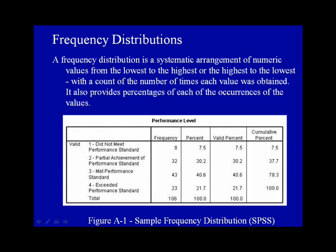As an example, if we consider an analysis of a group of students who completed a standardized language arts test, the results of this test includes a performance level indicator coded as follows: Level 1, students who do not meet the learning standards. Level 2, students show partial achievement of the learning standards. Level 3, students meet the learning standards. Level 4, students exceed the learning standards for English language arts.